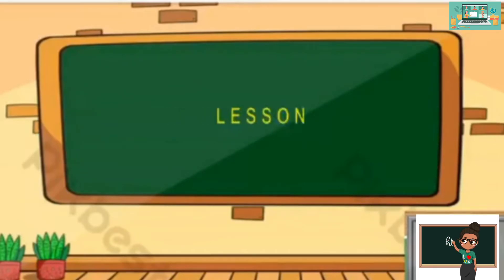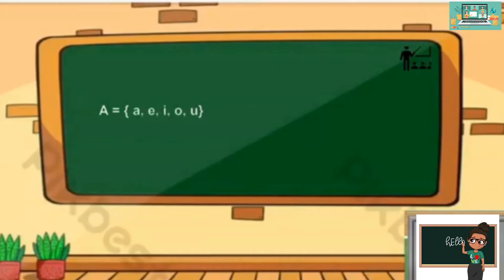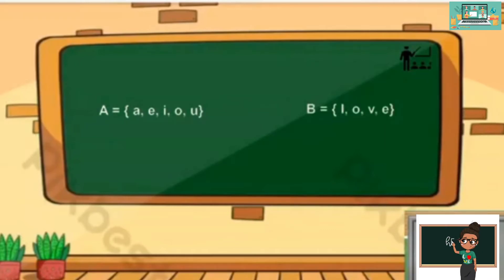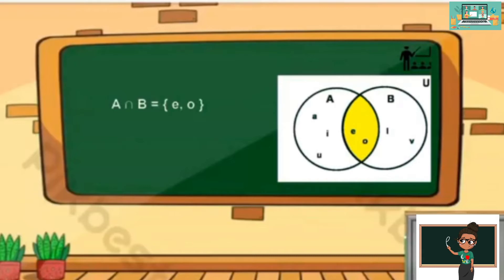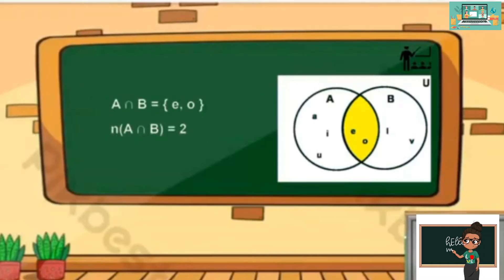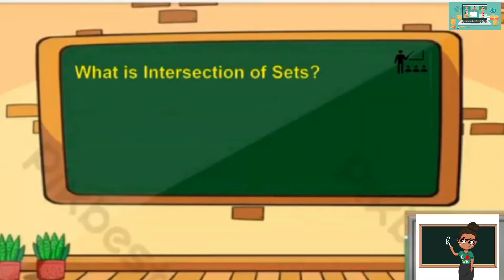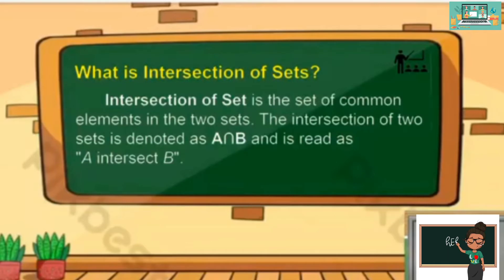Let us proceed with our lesson for today. Suppose you have set A with elements A, E, I, O, and U, and set B with elements L, O, B, and E. Do they have common elements? Let's represent them using the Venn diagram. The common elements of set A and set B are E and O. This shaded part is the intersection of A and B. So A intersect B consists of elements E and O. The cardinality of the intersection of A and B is equal to 2. The intersection of a set is the set of common elements in two sets, denoted by this symbol and read as A intersect B.